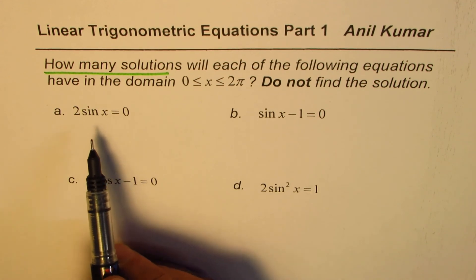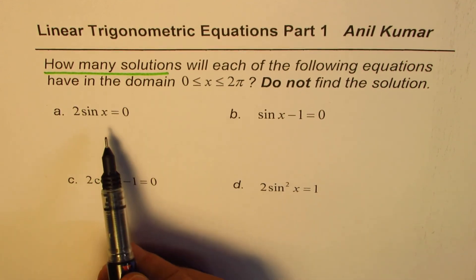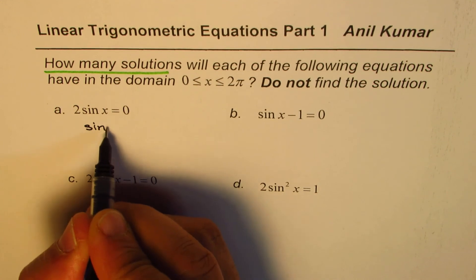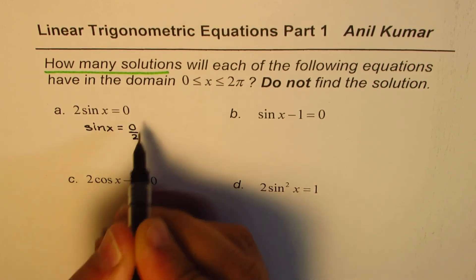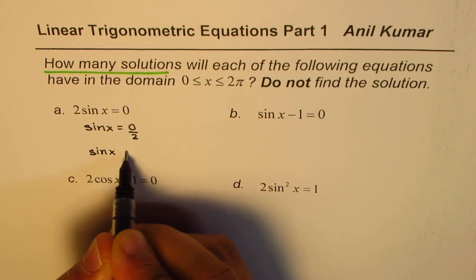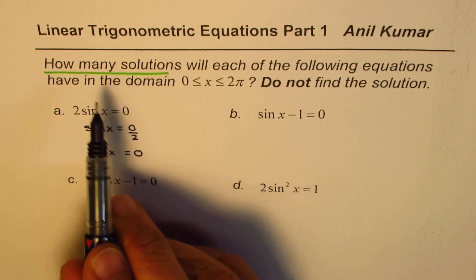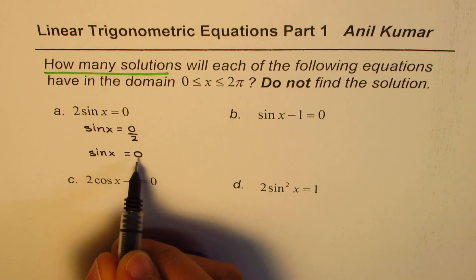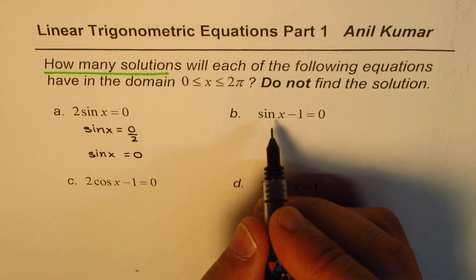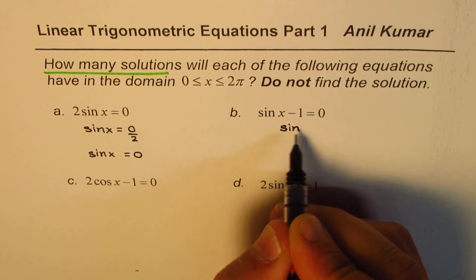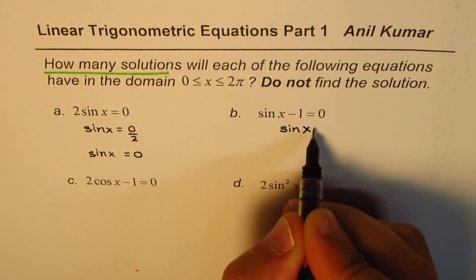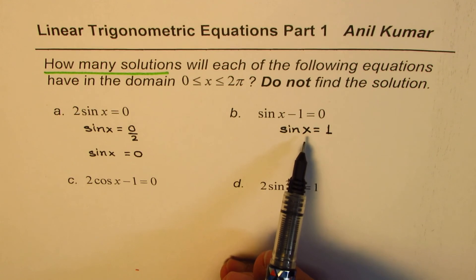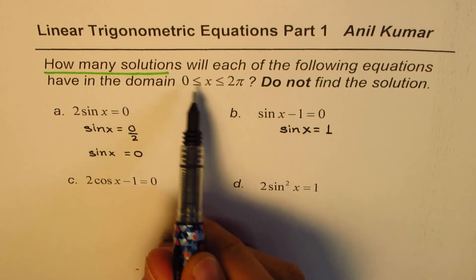To solve any trigonometric equation, the concept is similar to solving a regular equation. For example, 2 sin x = 0 gives sin x = 0. When we find the solution, we ask: what value of x makes sin x equal to 0? For sin x − 1 = 0, we want to find the value of x so that sin x = 1. The question is how many such values are possible in the domain 0 to 2π.